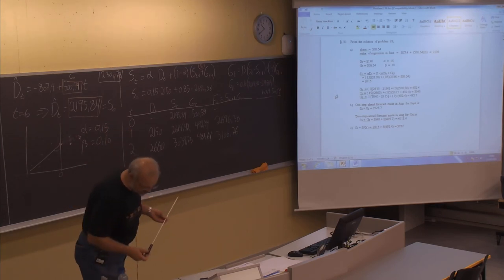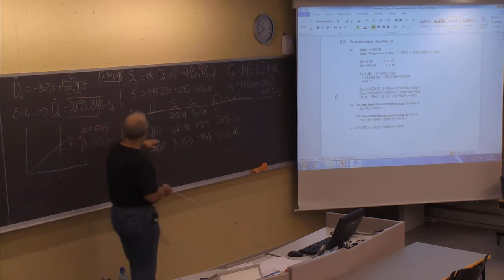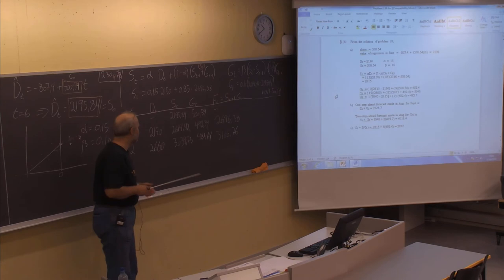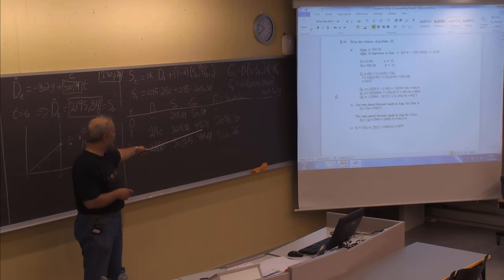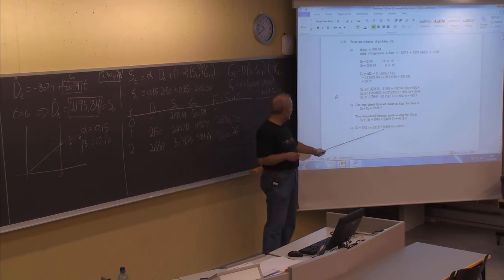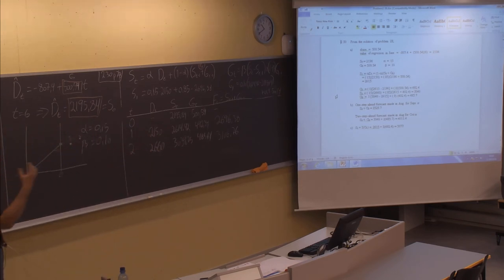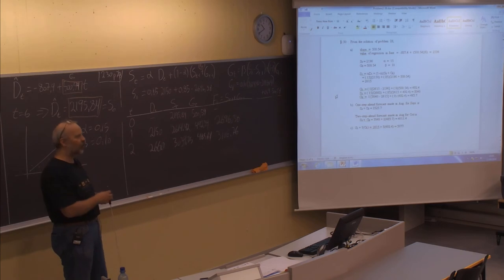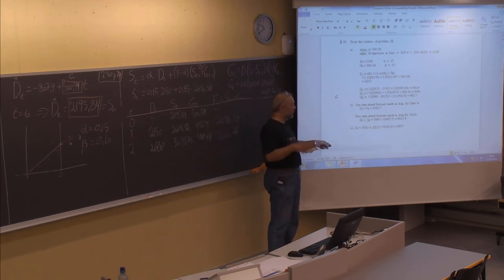The next question asks for the forecast made at the end of July for December. End of July is period one, so we use S1 and G1. December is five periods ahead from July, so the forecast is S1 plus 5 times G1, giving approximately 5077. When forecasting further ahead without new data, we assume the gradient stays constant since no other information is available.